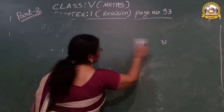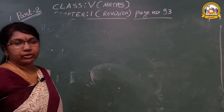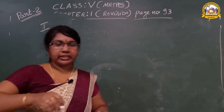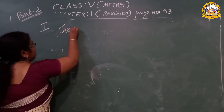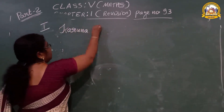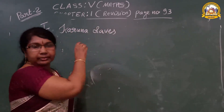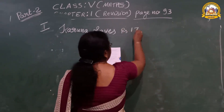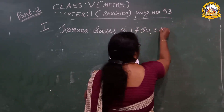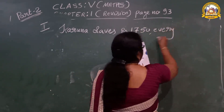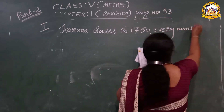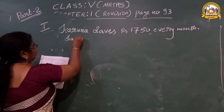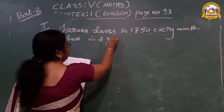Look here, next question. Question number I. Kairuna saves ₹1,750 every month. How much will she save in two years?